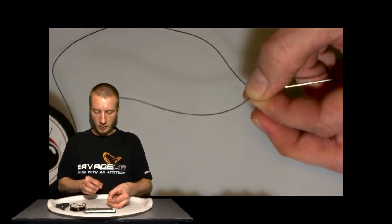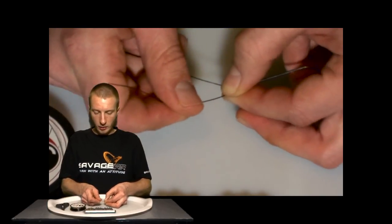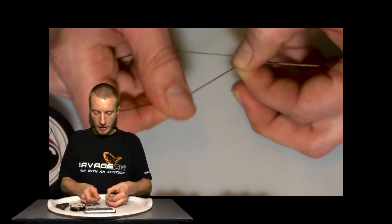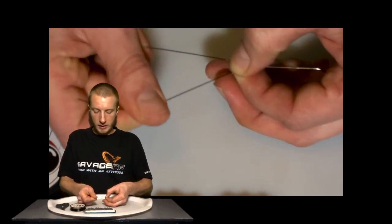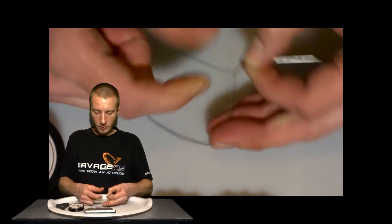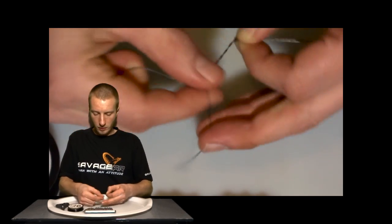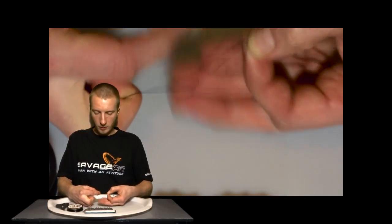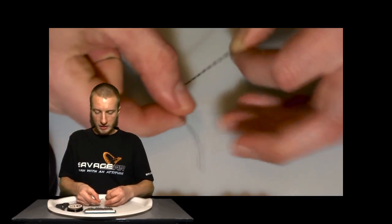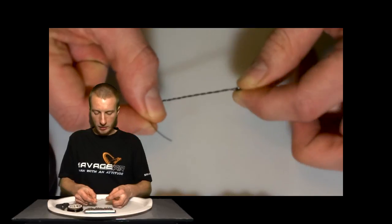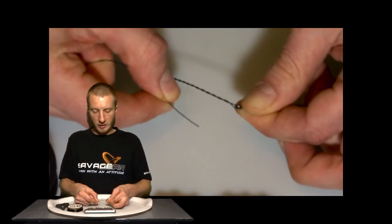Pinching with your left hand, then basically all you need to do is wrap the tag end around the main body six or seven times. Once that is done, put the tag end through the loop you've created next to the eye.